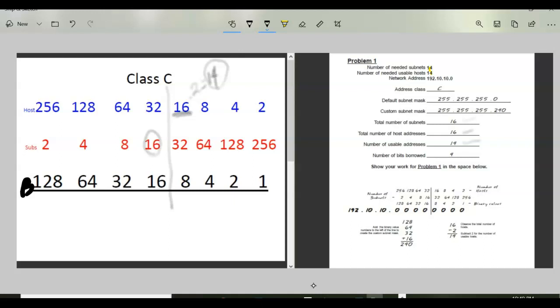Now how many bits did I borrow to be able to do that? Well if you come over here and take a look these are all bits right? And we learned in binary that if we use a bit we turn it on and if we don't use a bit then it's off which is a zero. So as I'm working with this problem I used one, two, three, four bits and at that point the last four bits are going to be used to fulfill my host addresses. So I used four bits.